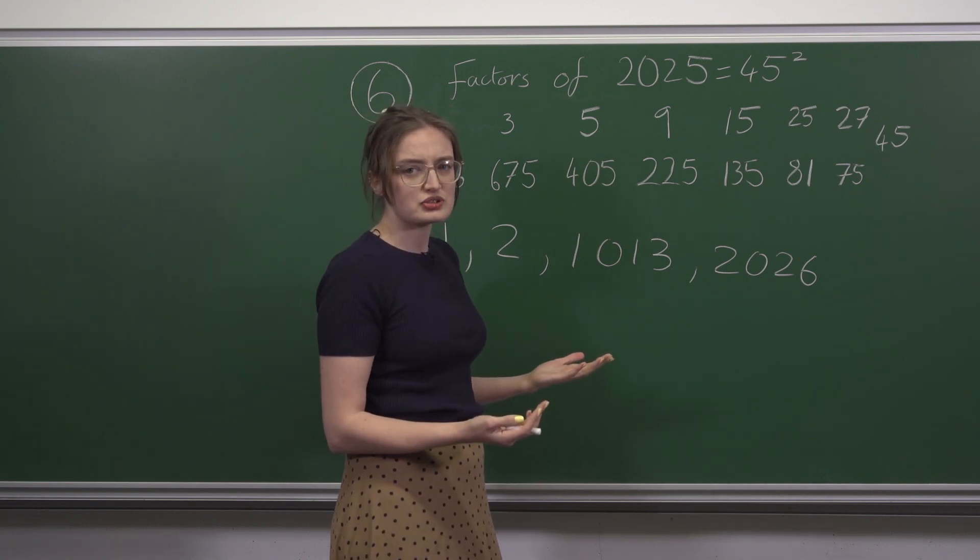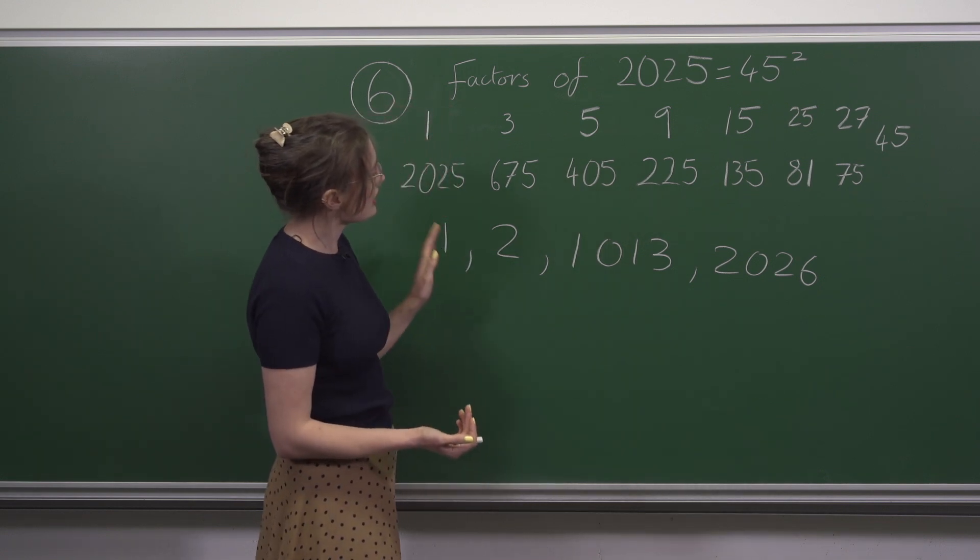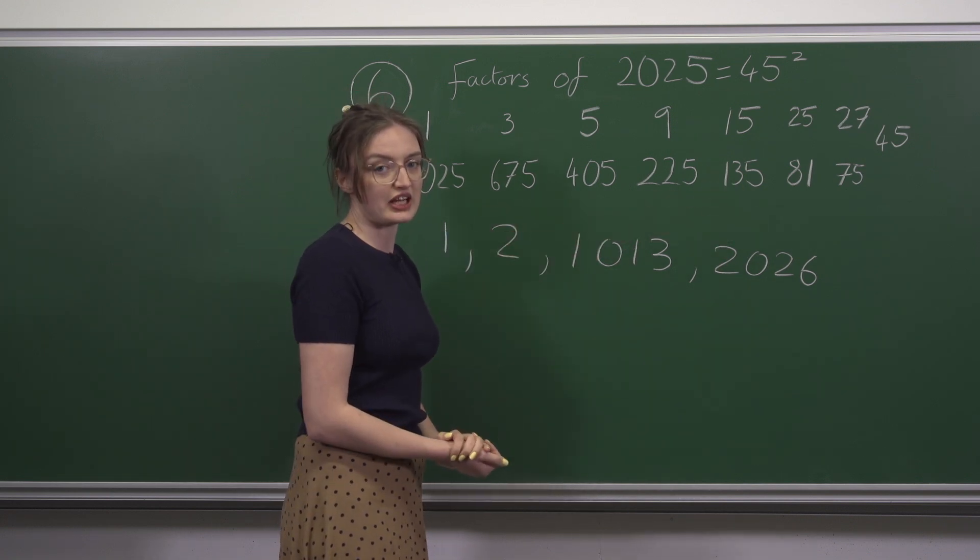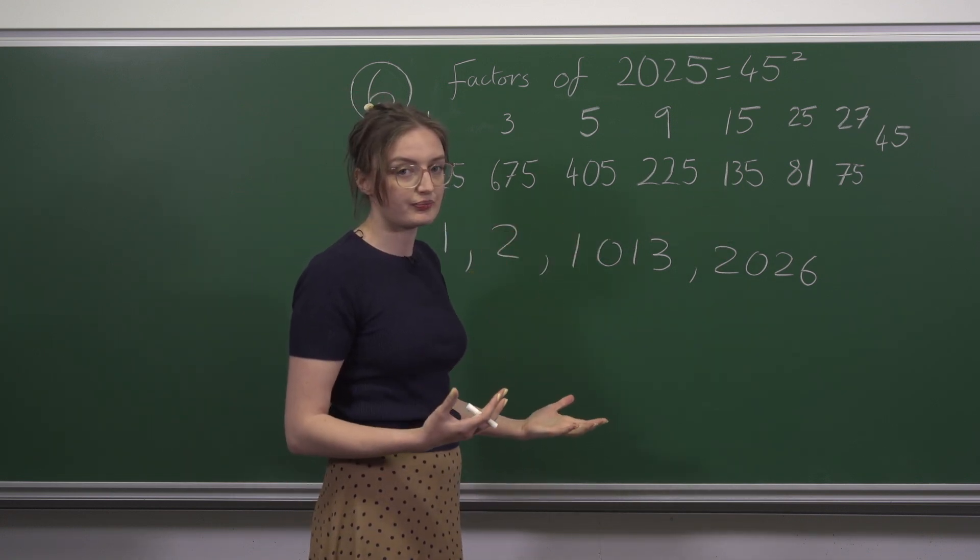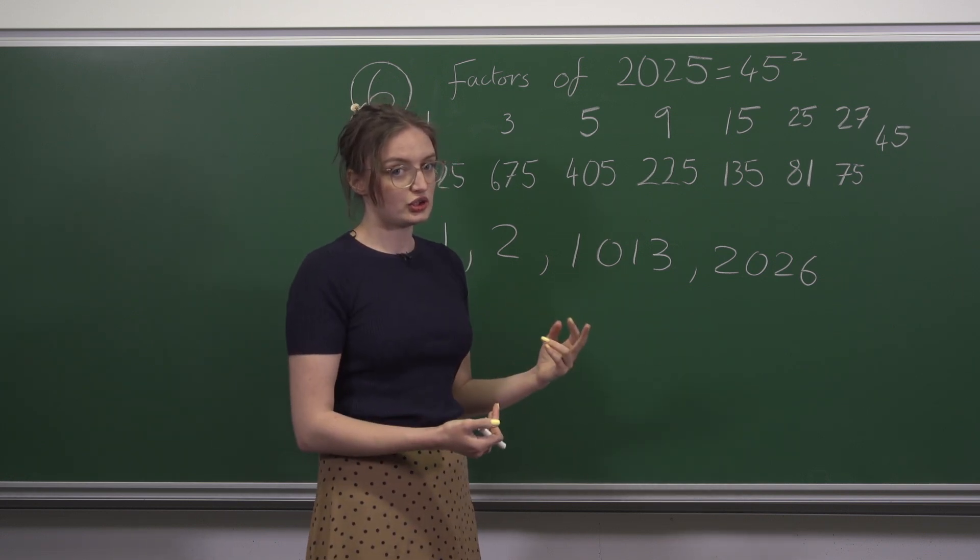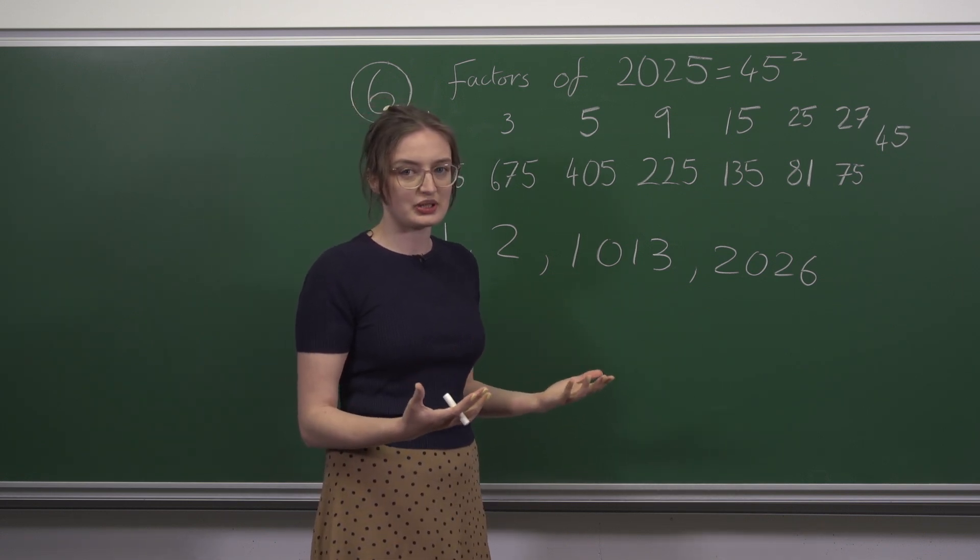What about even numbers? We have already said that the even factors don't affect whether the sum is even or odd. If we multiply a number by 2, what extra factors do we get?